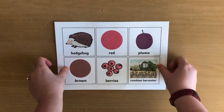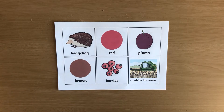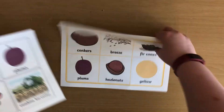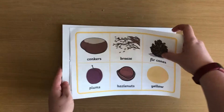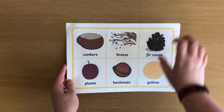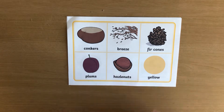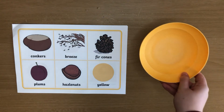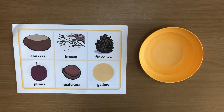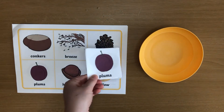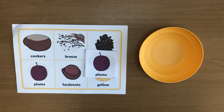We have several bingo games themed around the weather and seasons. This autumn bingo activity is a great way to teach children about the changing seasons. This could be played in a big group or a small group or individually.